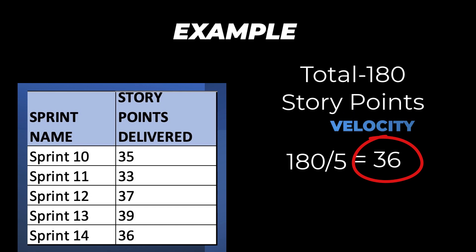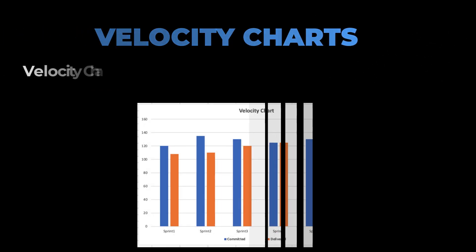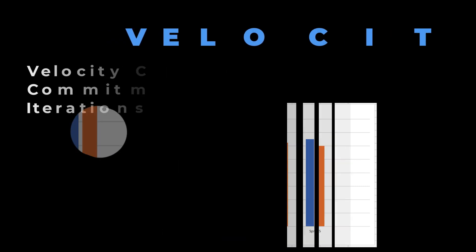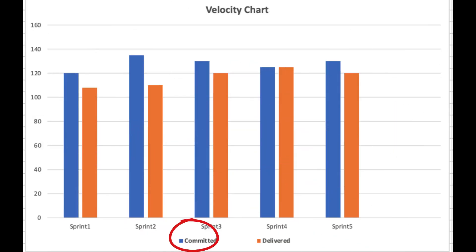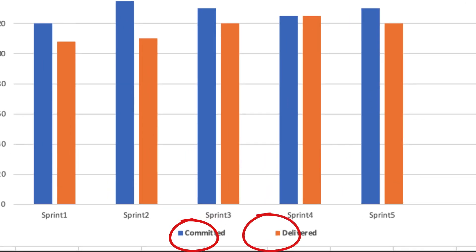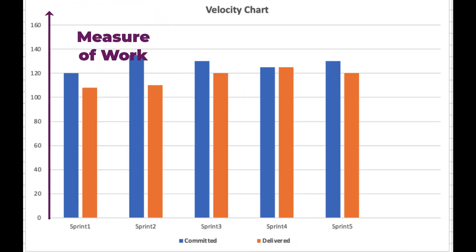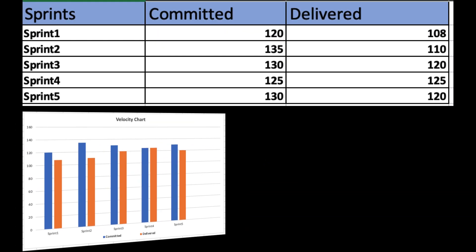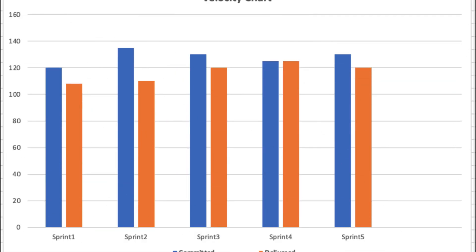We are now ready to talk about velocity charts. Velocity charts are comparison charts for commitment versus delivery for every iteration. The blue bar shows how much work has been committed and the orange bar depicts how much work has been delivered. The Y-axis is the measure of work and the X-axis shows the number of sprints. This velocity chart has been generated from five sprints of commitment versus delivery data. It can be read as: after the first two sprints, the team has been catching up on their commitments in the following three sprints. In general, velocity charts provide a view of whether velocity has been increasing, decreasing, or constant over time.